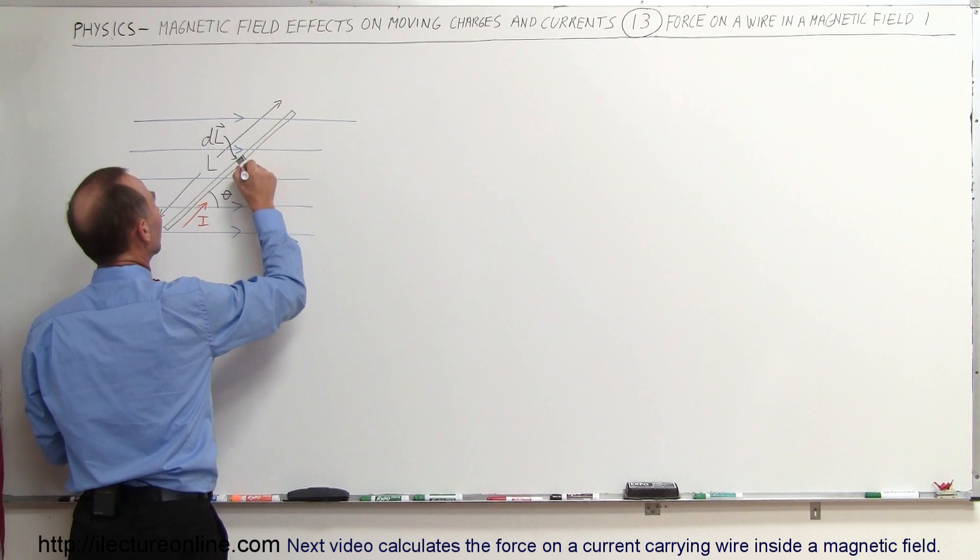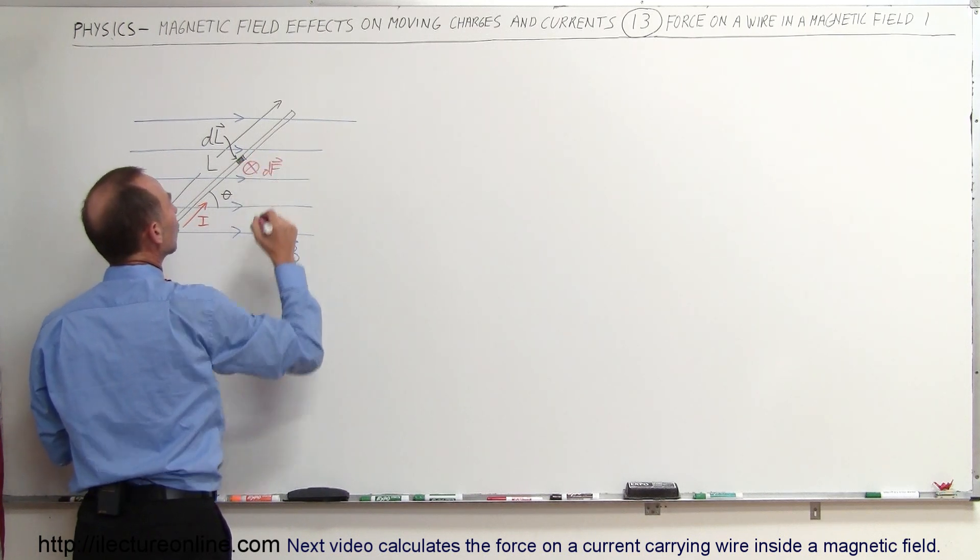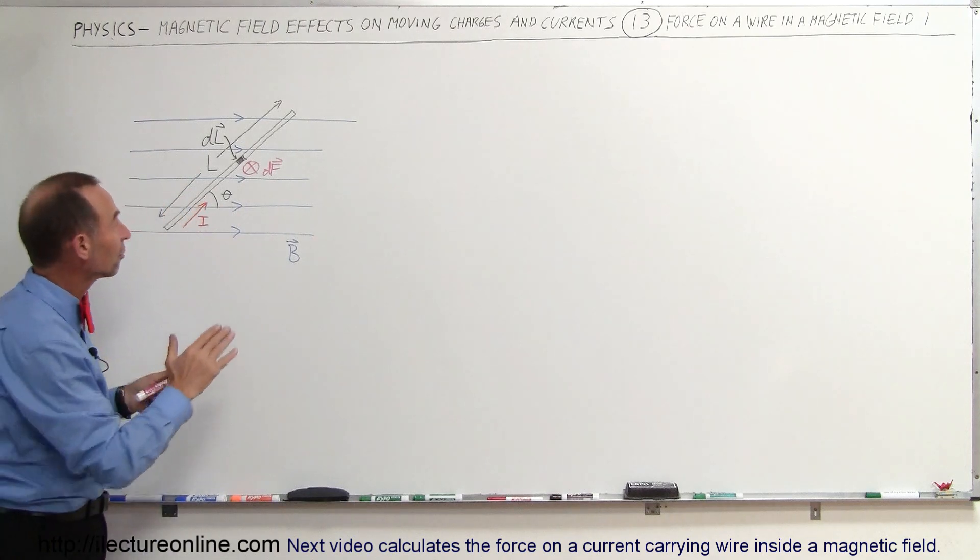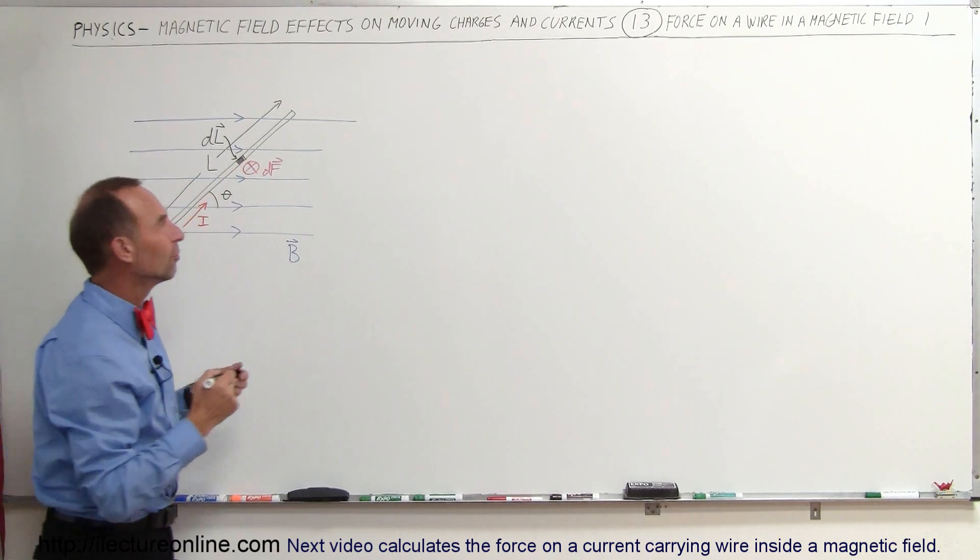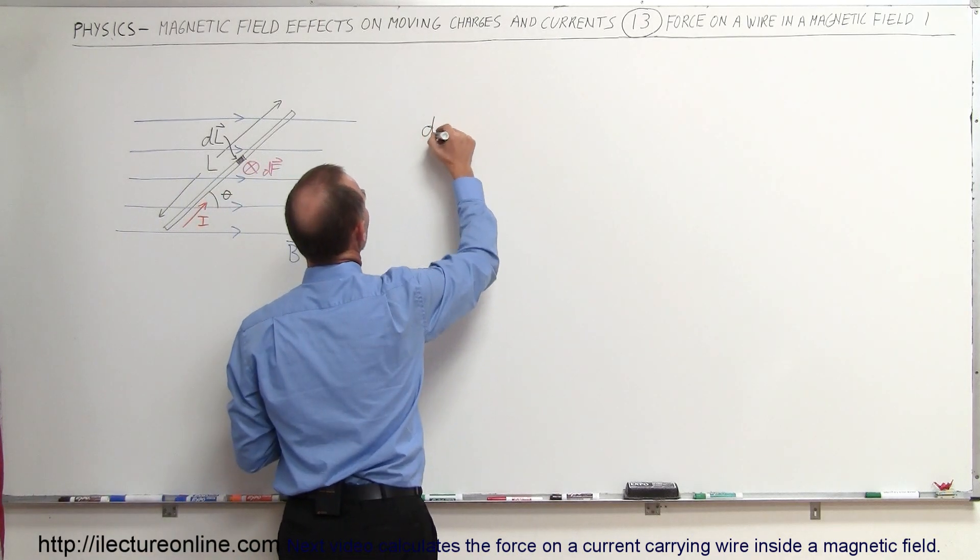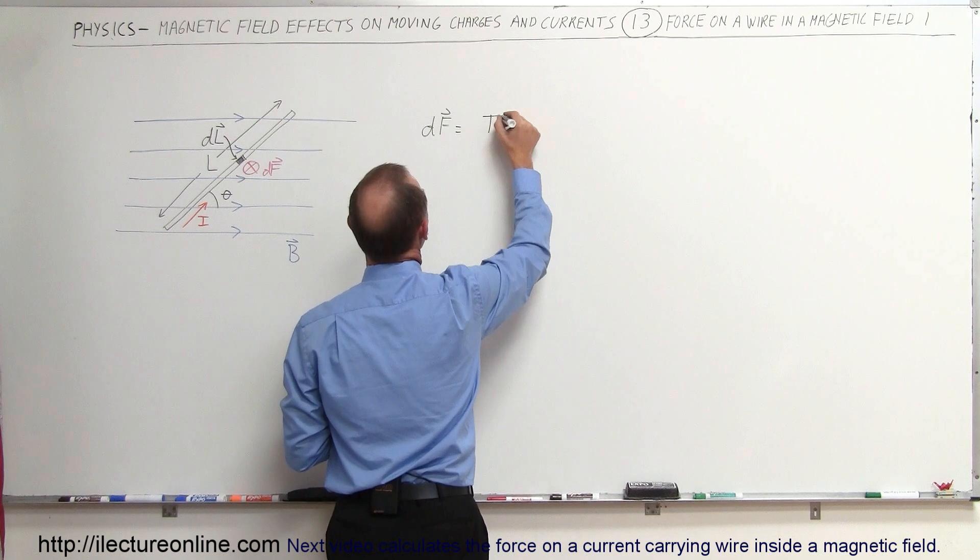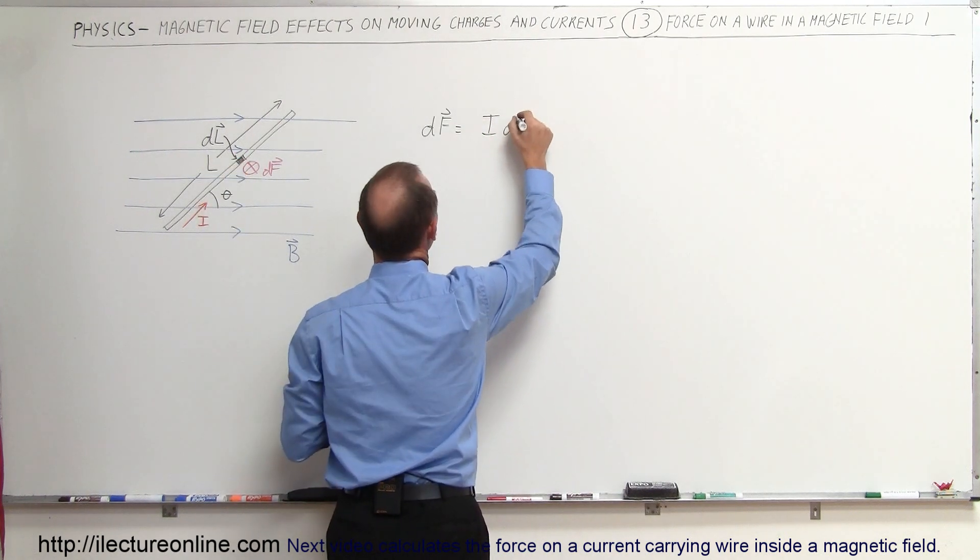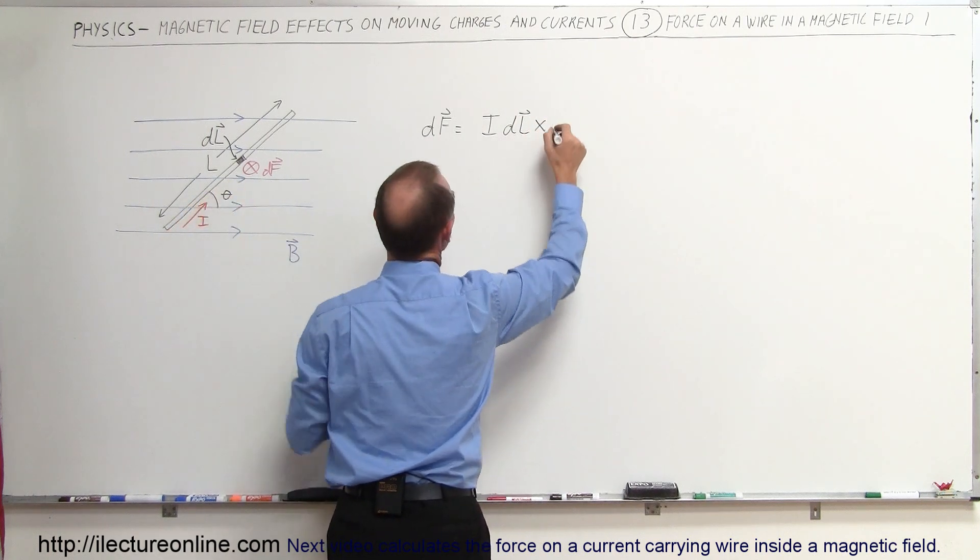So the force would be into the board right there. Let's call that small df caused by that small current element. So what is the magnitude of df? Well, the magnitude of df is going to be equal to the current times the length dl times the strength of the field—so it's I times the length times the strength of the field.